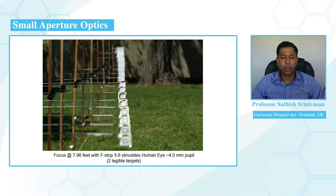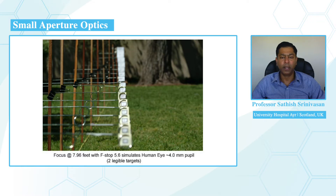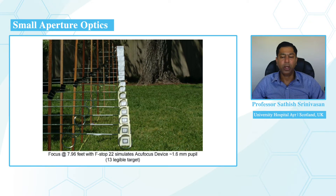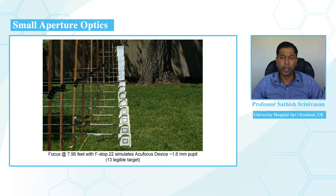This slide shows the depth of focus set at 7.96 feet with an f-stop of 5.6, simulating a human mesopic pupil of 4 millimeters. As you can see, only two targets in the middle are legible. By changing the f-stop to 22, which simulates a pupil size of 1.6 millimeters, many more targets come into focus. These two slides drive home the point that by reducing the aperture size, one can increase the depth of focus without compromising optical image quality.